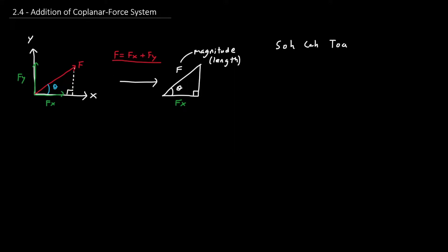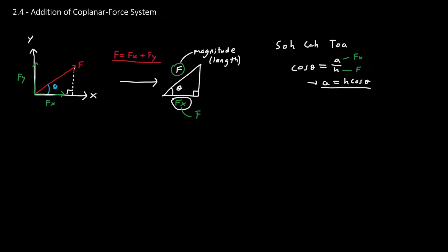From the sketch, we know that Fx is adjacent to the angle. So we use cosine, since cosine theta equals the adjacent over the hypotenuse. Solving for the adjacent, we get a equals h cosine theta. Here the adjacent is Fx and the hypotenuse is F. So substituting, Fx equals F cosine theta, which is the x component of the force.